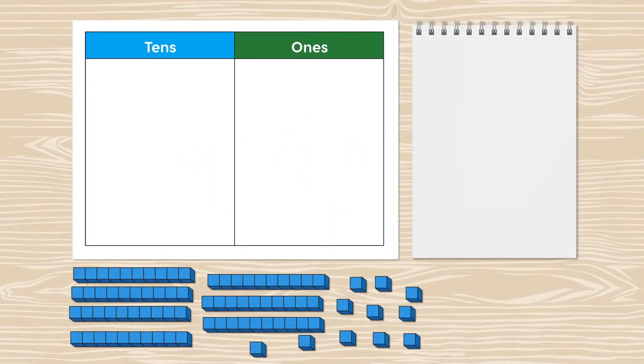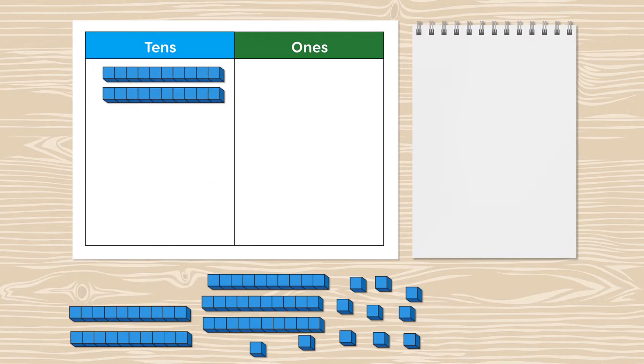Let's add 24 and 13 using base 10 blocks and a place value chart. We can show 24 using 1, 2 tens and 1, 2, 3, 4 ones.